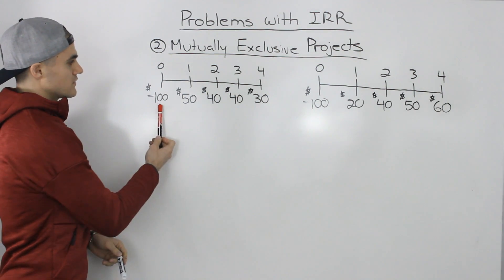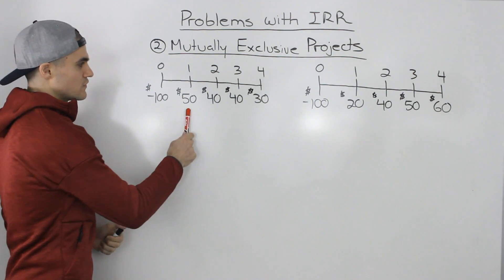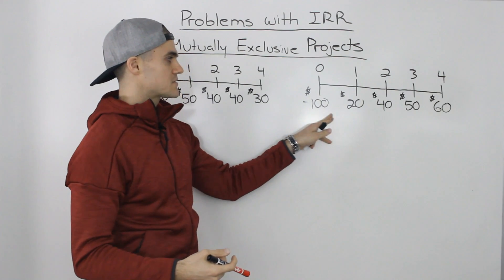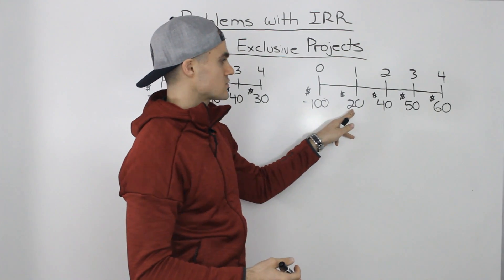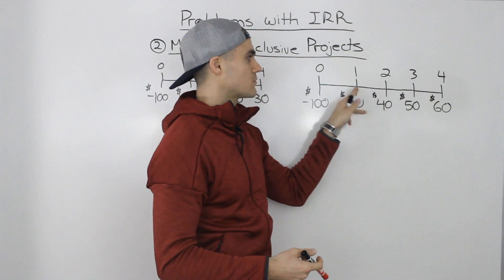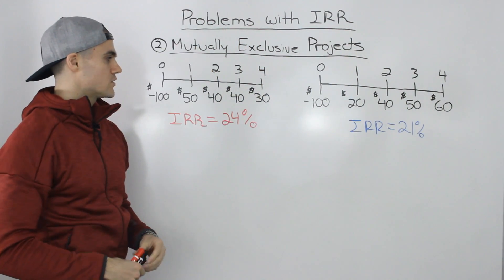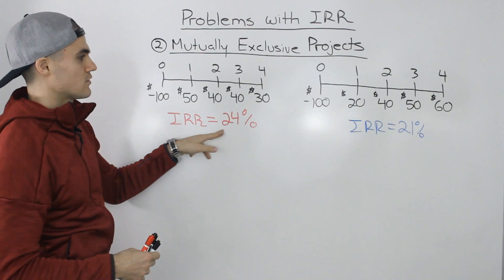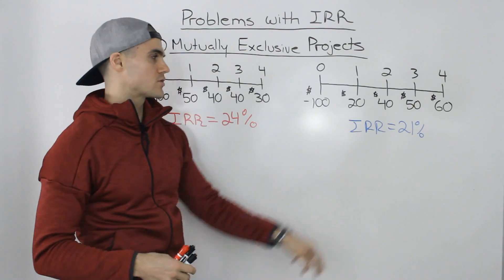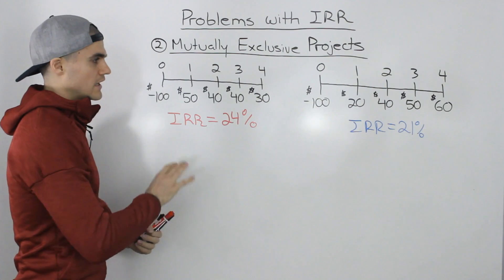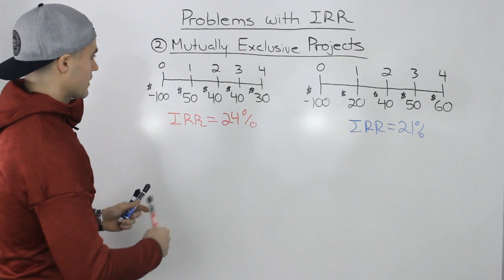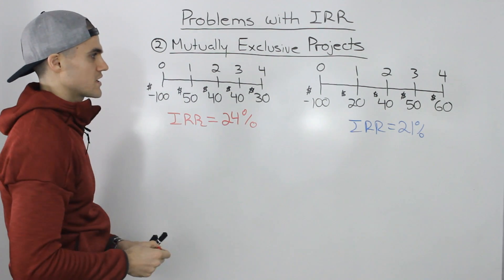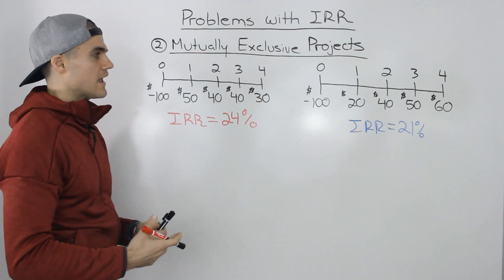Say we only have $100 to spend. If we invest $100 in Project A it generates cash flows of $50, $40, $40, and $30 from years one to four. If we invest $100 in Project B it generates cash flows of $20, $40, $50, and $60 over years one to four. Computing the IRR for both projects gives 24% for Project A and 21% for Project B.